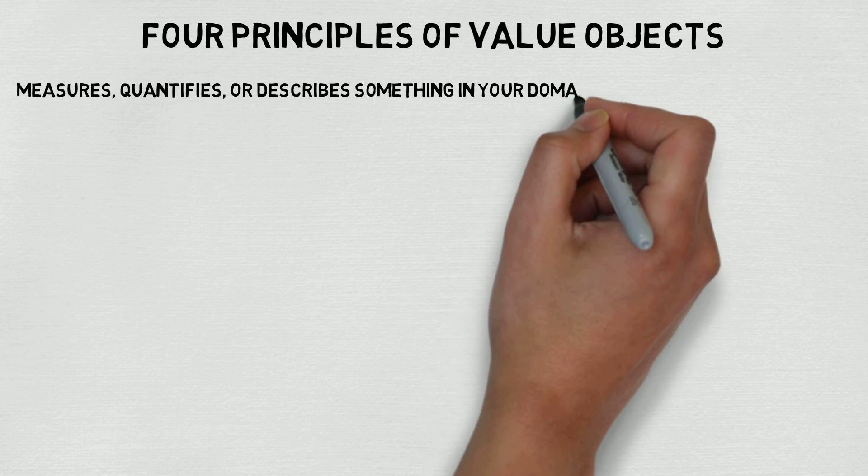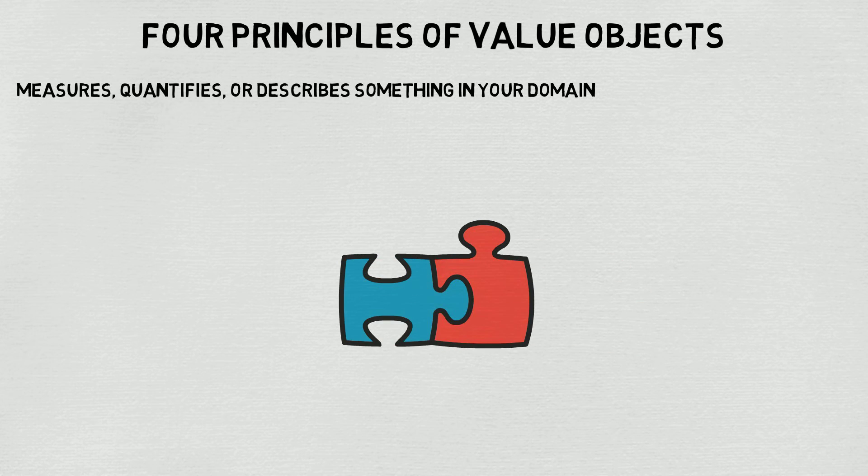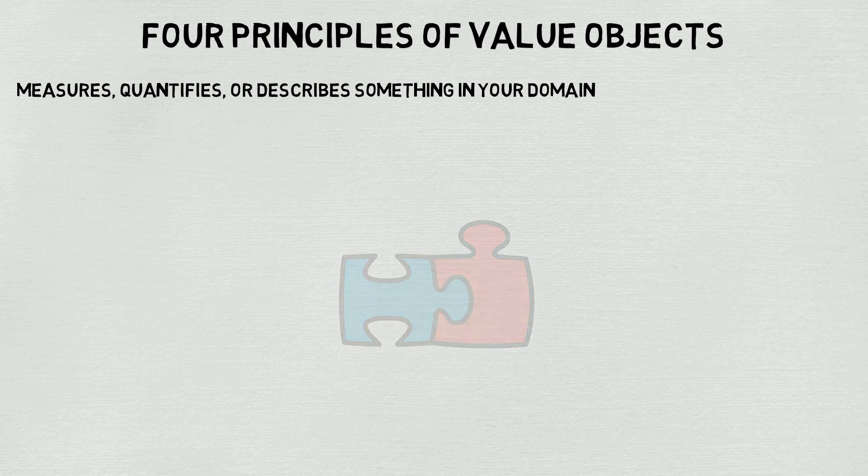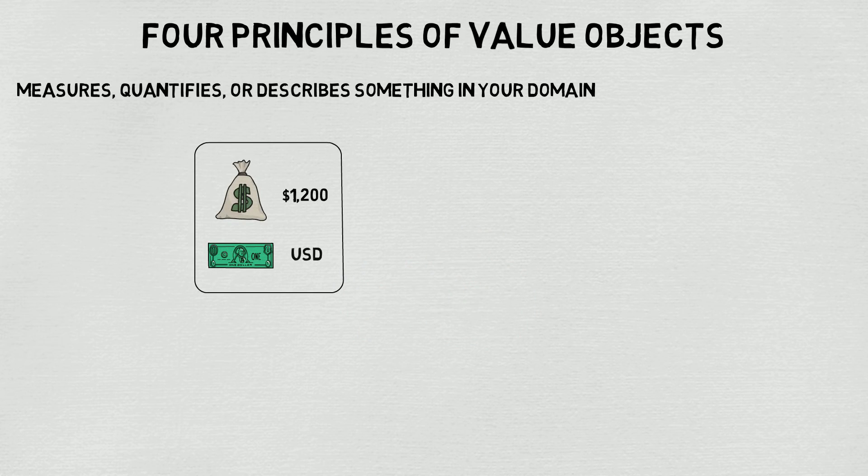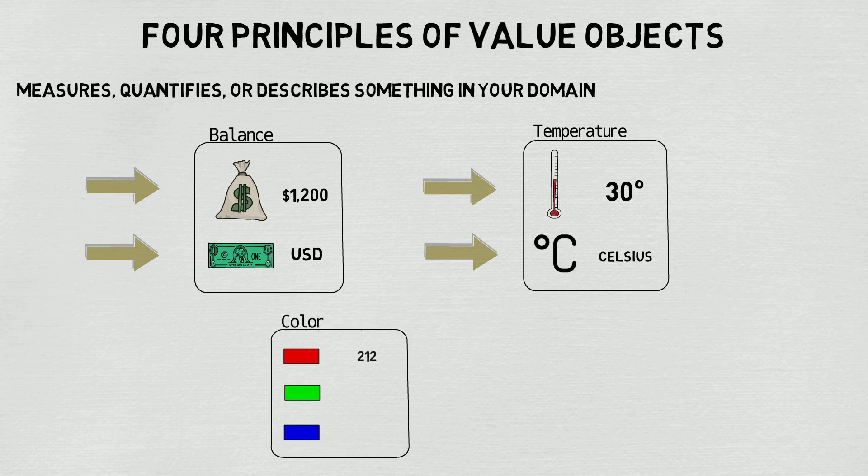Now let's recap the four principles of value objects again. The first is it measures, quantifies, or describes something within your domain. Remember to think about the relationships we establish between properties inside of our value objects. If we think about our bank accounts, it's important to have both the total amount of money and the currency it's in. This is similar to how temperature works as well. You need to have both the total number of degrees and the scale used to take an accurate temperature. And lastly, think back to how we use the relationship between RGB values as the basis to create new colors.